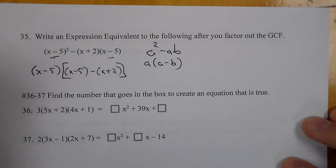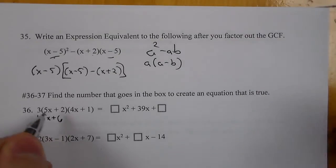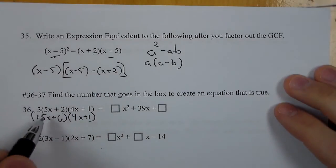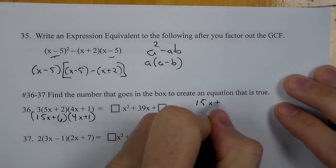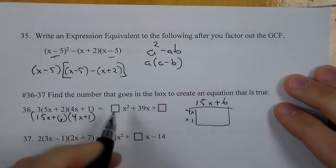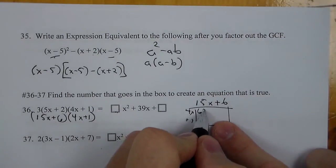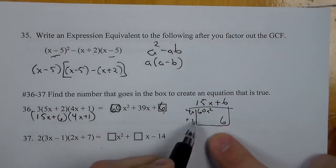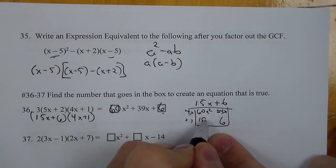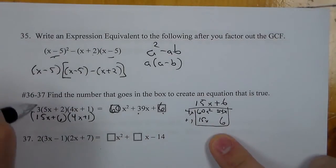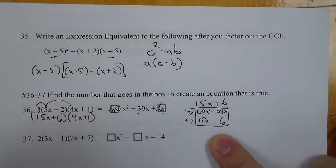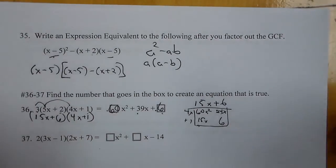For problems 36 and 37, we need to figure out the number that goes in the box. We get 15x plus 6 and 4x plus 1. Using the box method, the extreme values are the first: 60x squared, and the last: 1 times 6, which is 6. The middle cross terms 24x and 15x become 39. So it's really 3 times 5 times 4 equals 60, and 3 times 2 times 1 equals 6. If you don't see that pattern, just multiply it all out and match the values.